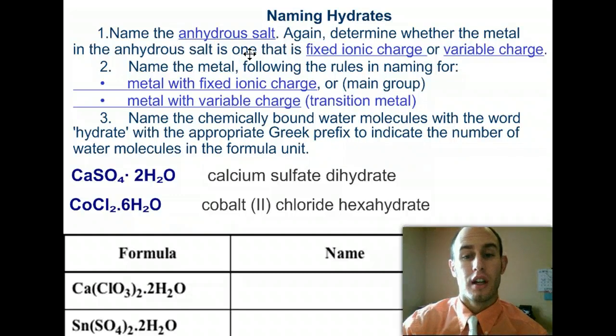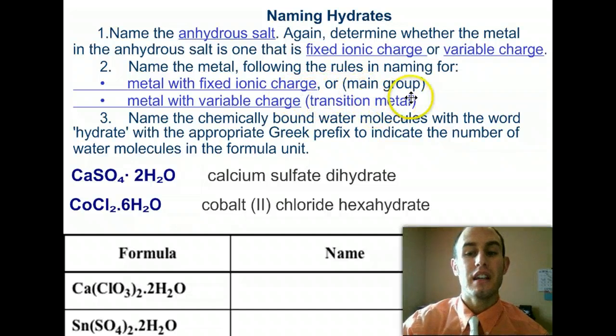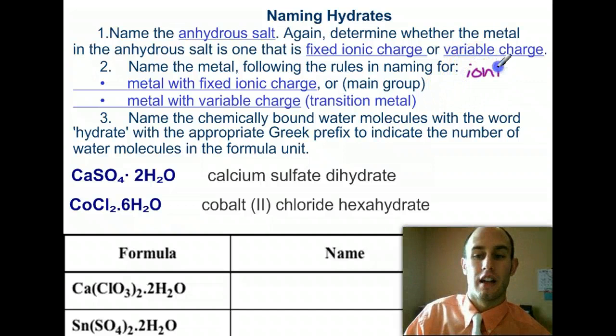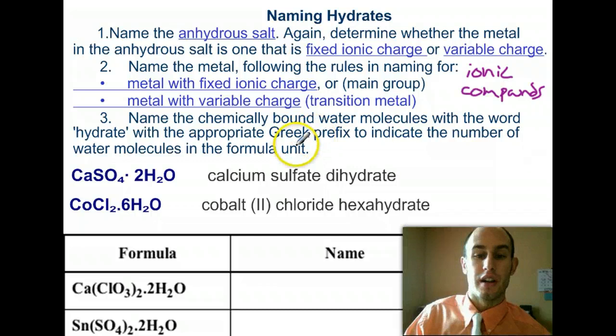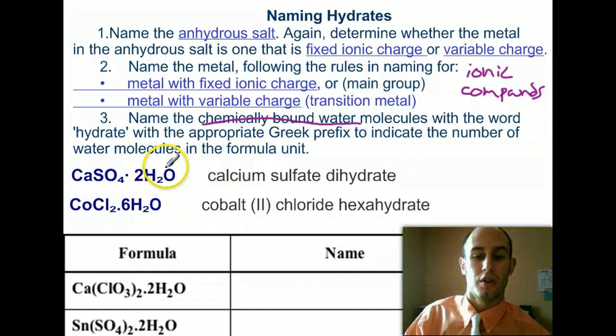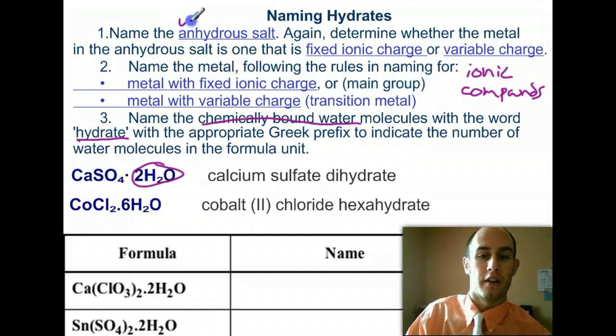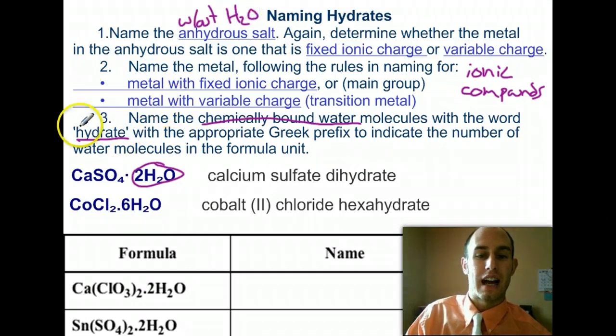With no water, you're going to look, does it have a main group element bonded to it or a transition metal? Basically, these are all of the ones that we've covered already as far as naming ionic compounds. That's basically what we've covered before: naming ionic compounds. Those are the same rules. What's new here is if it's chemically bonded with a water molecule. In these examples, they have water. That is what we call a hydrate. Hydrate means with water. Anhydrous, without water.